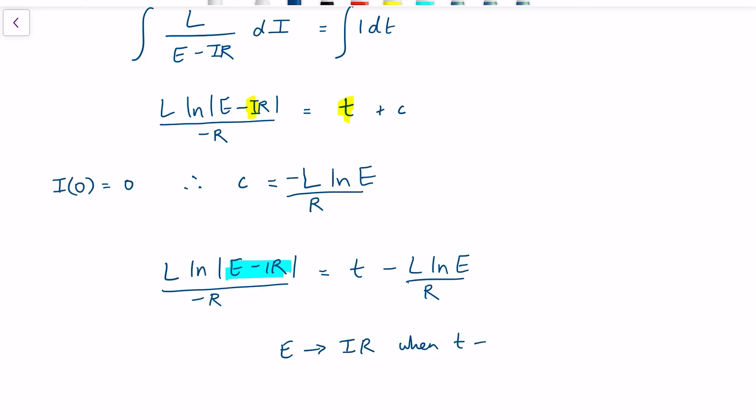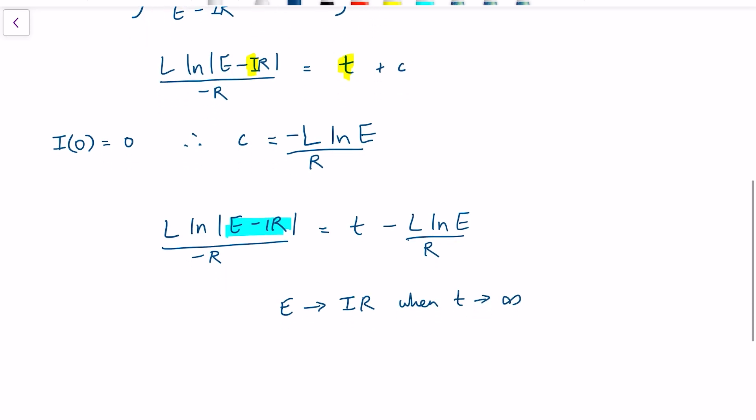And because it asks for the limiting current, I tends to E over R, some ratio between E and R. So that's one way of doing it. It seemed a bit dodgy but we kind of subbed in infinity into the right hand side for the time.